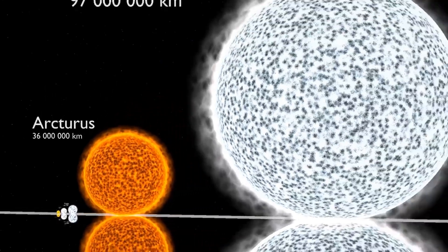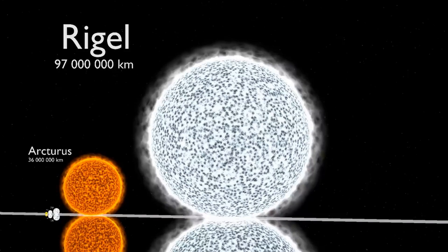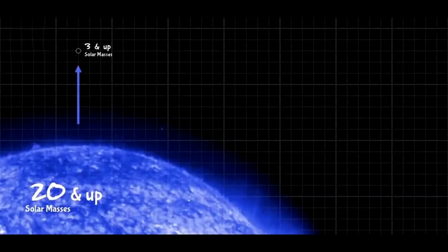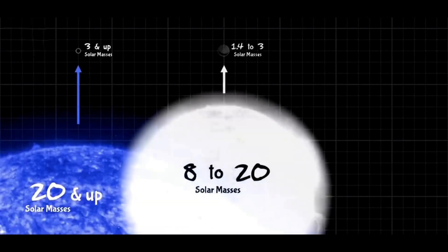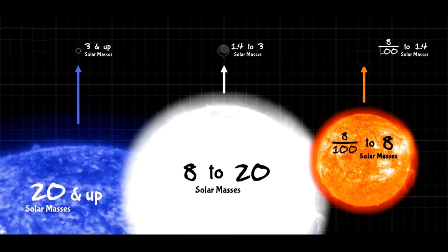Next up, we have Rigel. Rigel has a diameter that's 74 times larger than the sun. Now, don't let Rigel's massive size fool you, because most giant stars are somewhat hollow. Its mass is only 18 times that of the sun. For stars with masses between 8 and 20 times that of the sun, when they explode and die, they don't form white dwarfs. Instead, they form neutron stars.